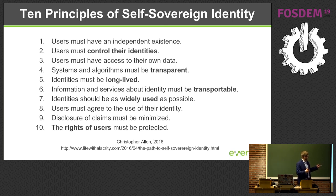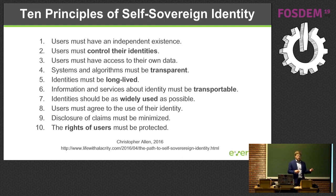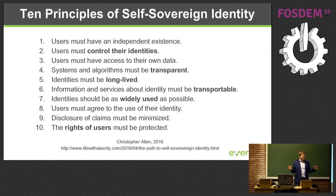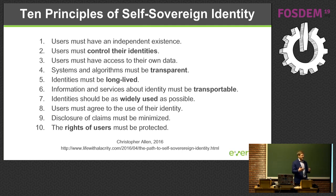Christopher Allen is an early adopter of these principles. He's building self-sovereign identities on the blockchain ecosystem and has formulated ten principles that are a good summary of what makes self-sovereign identity. As a user, I have an independent existence — no organization can take away my existence. I am in control of my identity, I have access to my data, it needs to be transparent. Open source is really valuable here because it allows me to see how that identity is formed and used. It needs to be long-lived.